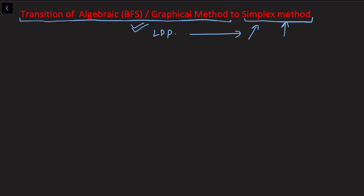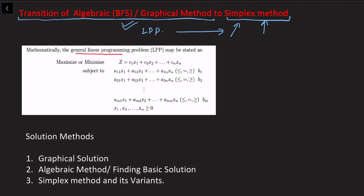Let's start by recalling what a linear programming problem is. This is the most general LPP — we can see there are constraints with less-than-equal or greater-than signs, and non-negative restrictions. In the solution methods discussed in previous videos, we covered the graphical method and the algebraic method — that is, finding basic solutions and then basic feasible solutions. One of the basic feasible solutions gives us the optimal value, and one of the corner points in a two-variable LPP gives us the best optimal solution.